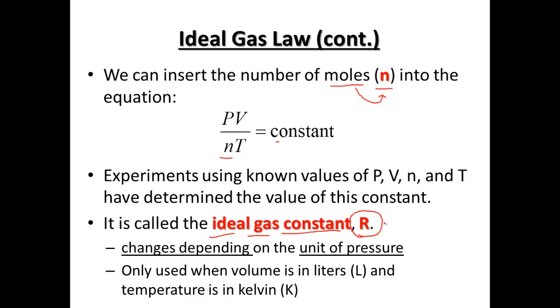Now, the ideal gas constant is to help keep that linear relationship between pressure, volume, and temperature. So the key part for it, it's going to change the R value, depending only on the units of pressure. So remember that key part, our R value depends on the units of pressure. Only when volume is in liters and temperature is in Kelvin, that's standard for what we're going to be working with.